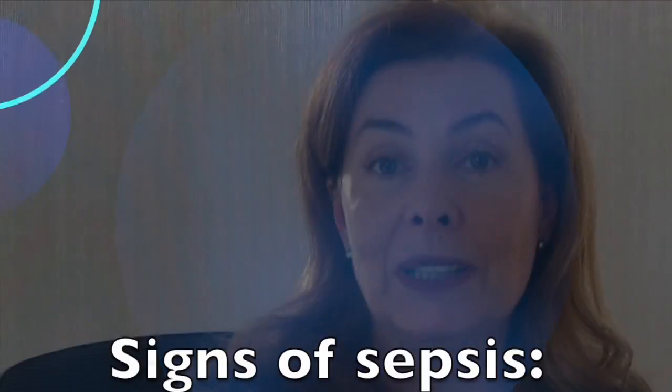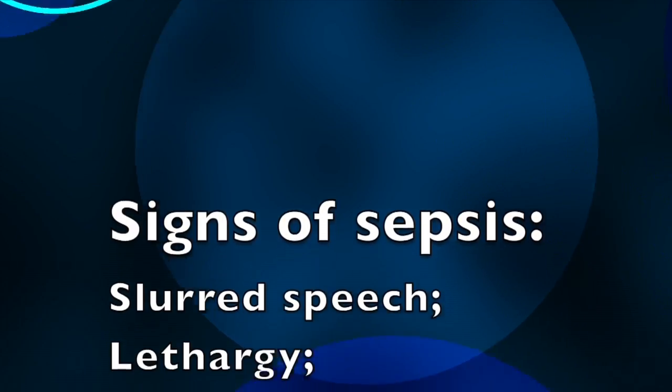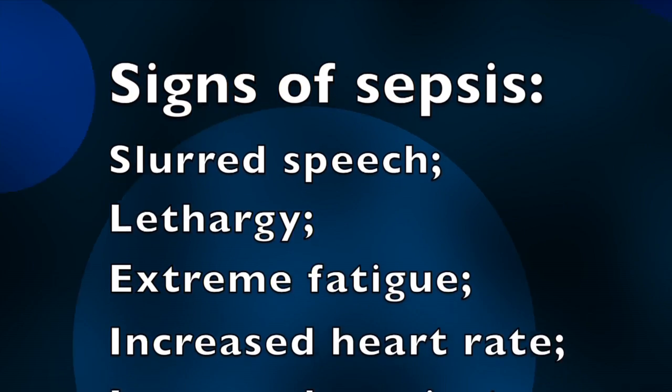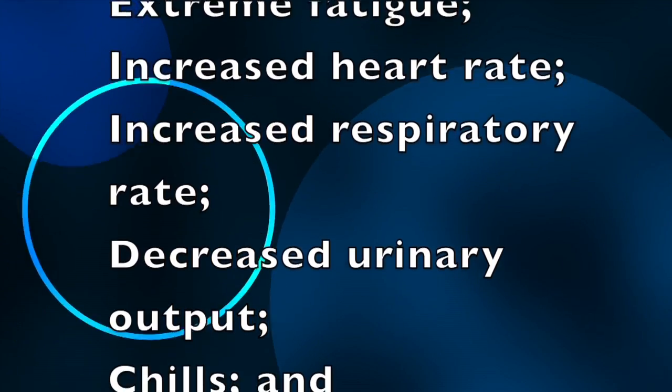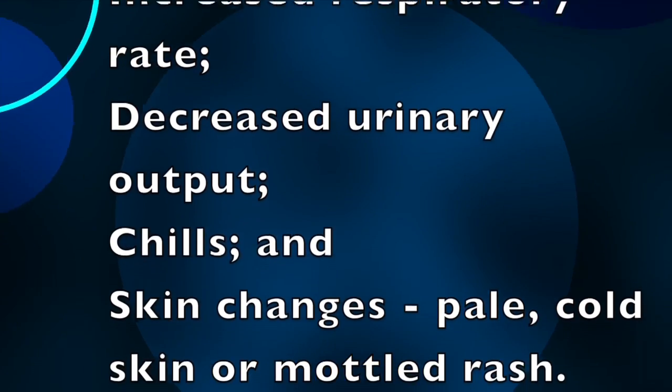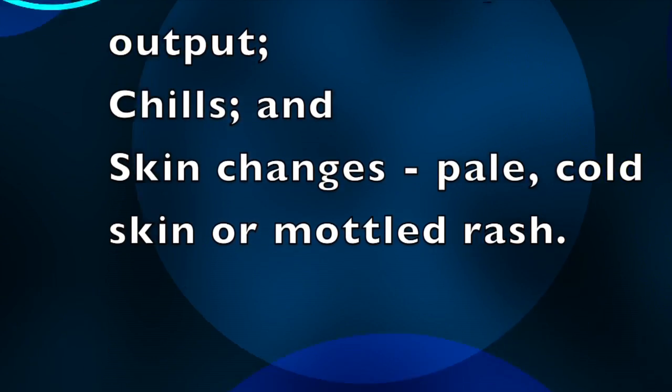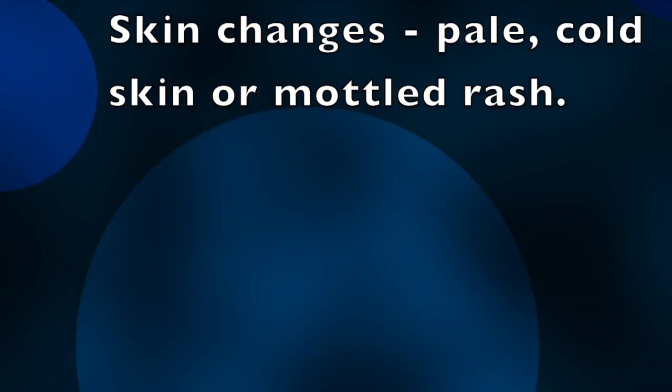The most common signs of sepsis reported by survivors of severe sepsis and septic shock include slurred speech, lethargy, extreme fatigue, increased heart rate, increased respiratory rate and decreased urinary output, rigors or chills, and also skin changes. Skin can be pale, cold, or mottled with a mottling rash.